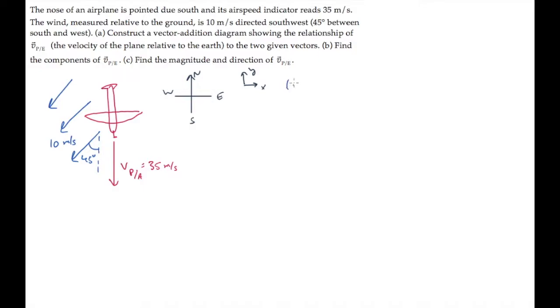Part A of the problem asks us to draw the relationship between the velocity of the plane relative to the earth and these two vectors. First, let's construct the velocity addition equation. The velocity of the plane relative to the earth equals the velocity of the plane relative to the air, plus the air relative to the earth.